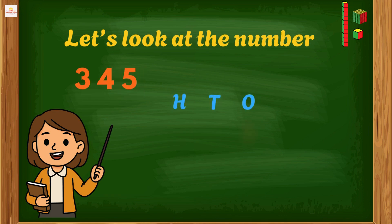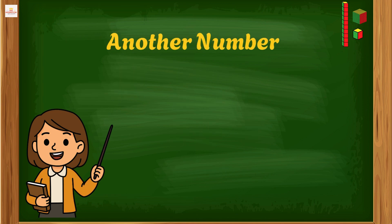Let's look at the number 345. The 5 is in the ones place, the 4 is in the tens place, the 3 is in the hundreds place. That means 3 hundreds equals 300, 4 tens equals 40, 5 ones equals 5. So 345 is really 300 plus 40 plus 5. Let's try another number: 706.